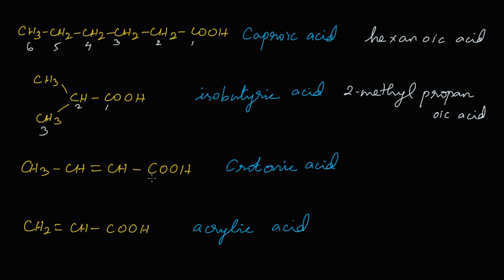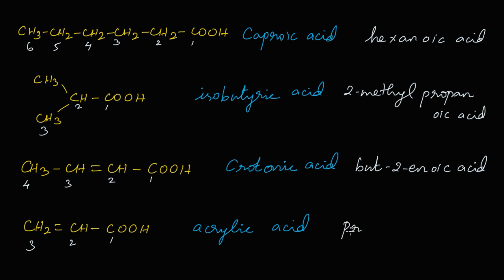For crotonic acid: there are four carbons in the straight chain — but — and because it is unsaturated with a double bond at the second carbon, it becomes but-2-ene. With the carboxylic acid suffix, the IUPAC name is but-2-enoic acid. For acrylic acid: three carbons — prop — with a double bond at the second carbon, giving prop-2-enoic acid.